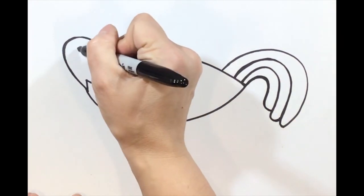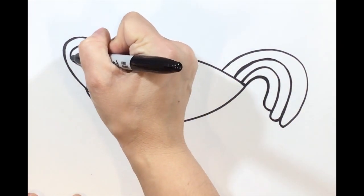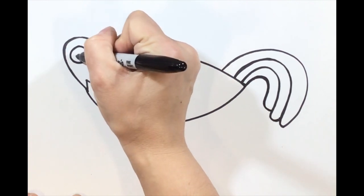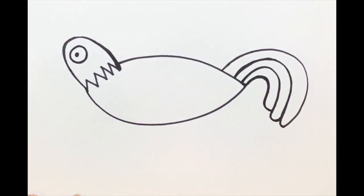Step number six, we're going to make one big circle in the head of our rooster to create our eye, and a little dot in the center for part of our eye.